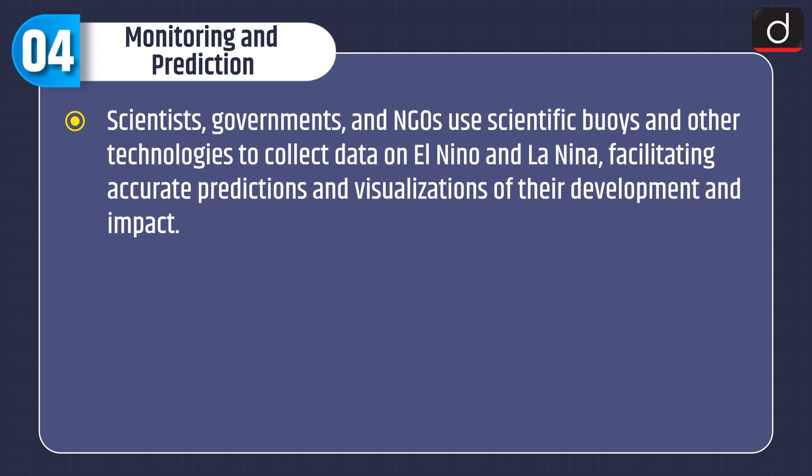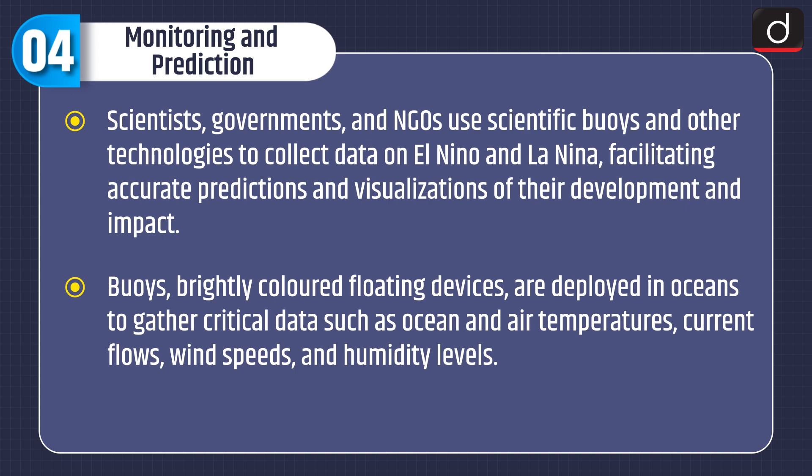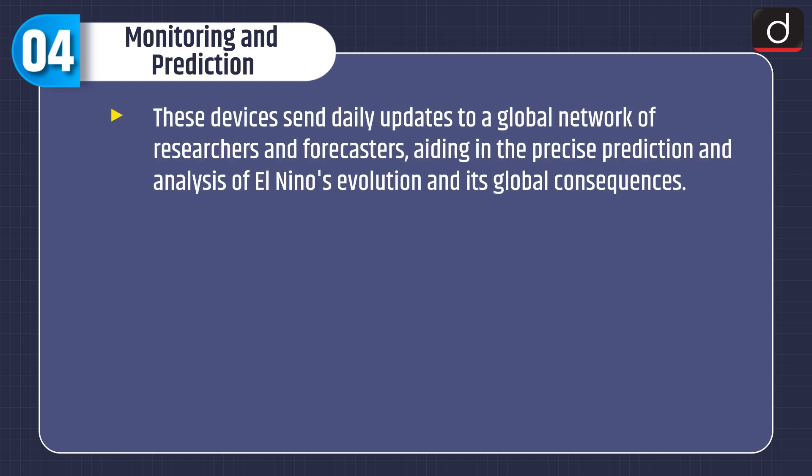Now moving on to monitoring and prediction. Scientists, governments, and NGOs use scientific buoys and other technologies to collect data on El Niño and La Niña, facilitating accurate predictions and visualizations of their development and impact. Buoys — brightly colored floating devices — are deployed in oceans to gather critical data, such as ocean and air temperatures, current flows, wind speeds, and humidity levels. These devices send daily updates to a global network of researchers and forecasters, aiding in the precise prediction and analysis of El Niño's evolution and its global consequences.